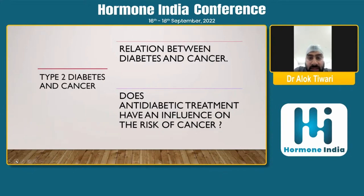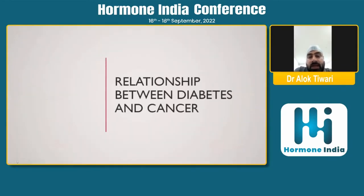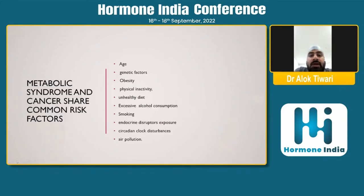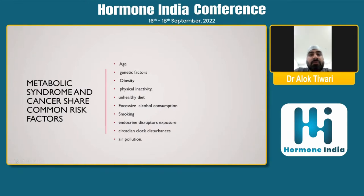Another important question is whether any anti-diabetic treatment has influence on the risk of cancer. There are certain relationships between metabolic syndrome and cancer due to common factors. For instance, with increasing age, more people are living into their 70s and 80s, and age is one of the biggest factors where cellular proliferation and cellular mechanics get changed, increasing cancer risk.